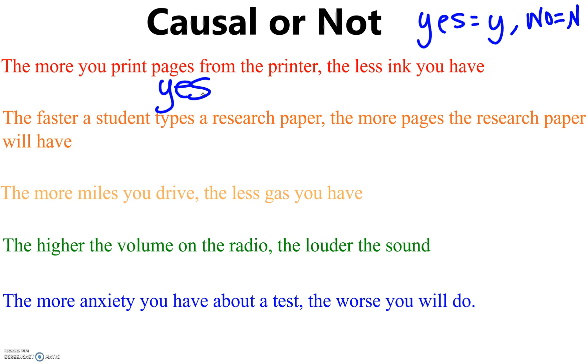The second one says, the faster student types a research paper, the more pages the research paper will have. That's not necessarily true because I could type it really quickly, but only do one page. And someone else could type extremely quickly, but they'll have more pages to their research paper. So not causal.